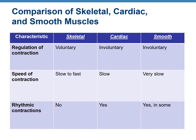Regarding control of contraction, skeletal muscles are voluntary, meaning they are under your conscious control. Cardiac and smooth muscles are involuntary. As for speed of contraction, skeletal muscles can contract slowly or very fast, cardiac muscle contraction is slow, and smooth muscle contraction is really slow.